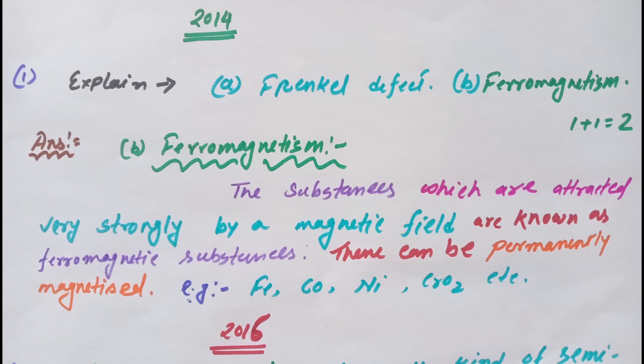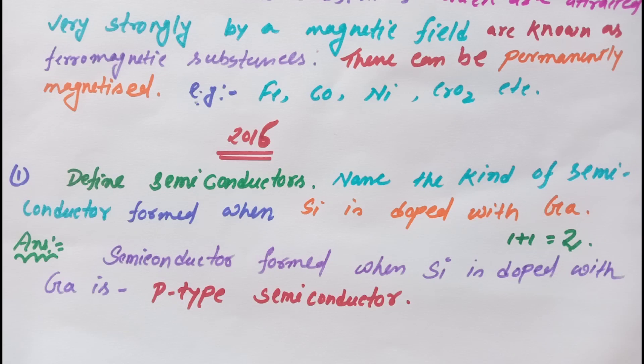Next question is from 2016: Define semiconductors. Name the kind of semiconductors formed when silicon is doped with gallium. I have already mentioned the definition of semiconductor.